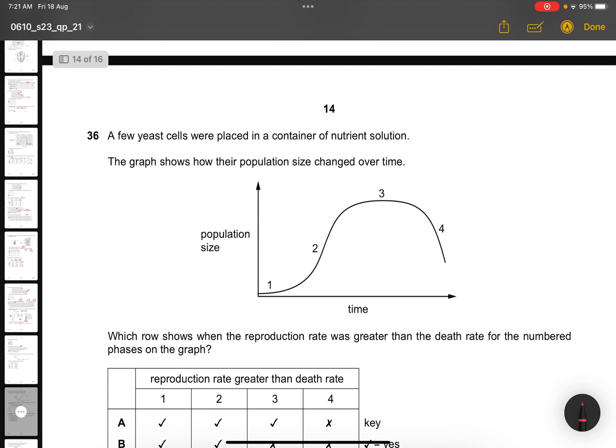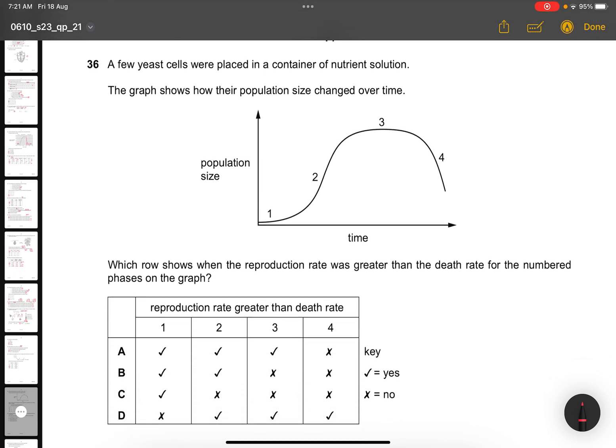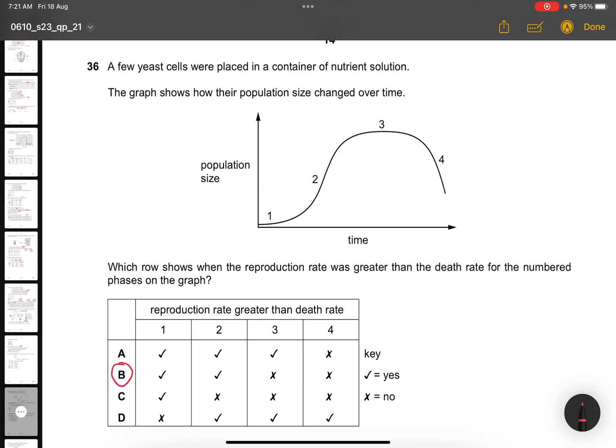Question 36. A few yeast cells were placed in the container with nutrient solution. The graph shows how their population size changed over time. Which row shows when the reproduction rate was greater than the death rate for the numbered phases in the graph? It would be 1 and 2 and not 3 and 4. So the answer would be B. Because this is equal already where birth is equal to death, and this will be more death than birth. So these two phases have more birth than death phases.